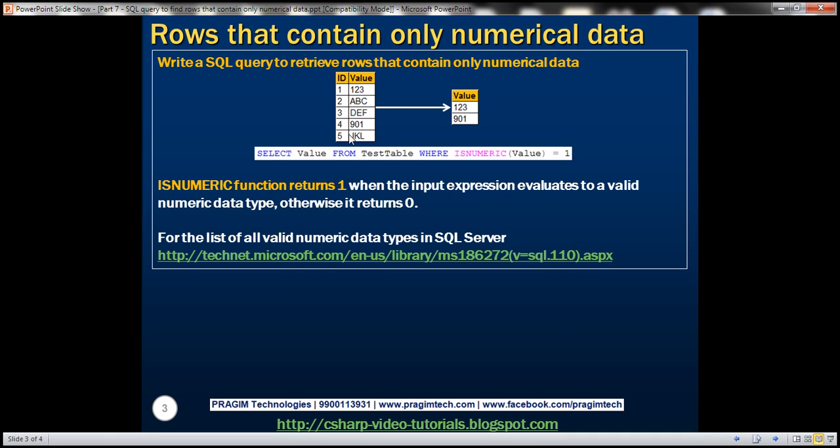Now we need to write a SQL query which is going to return only numeric data. If you have used isNumeric function, then you already know the answer. Whatever expression that you pass to this function, if that evaluates to a valid numeric data type, then this isNumeric function is going to return 1. Otherwise it returns 0.